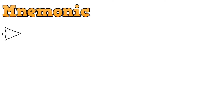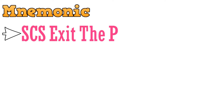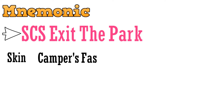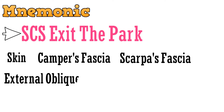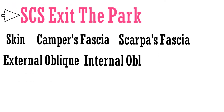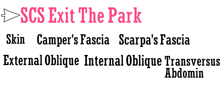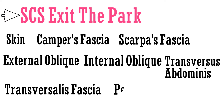The mnemonic to remember these layers is: SCS EXIT THE PARK. The first S denotes the skin, then Camper's fascia, and then Scarpa's fascia. The EX in EXIT is for external oblique, I for internal oblique, and T for transversus abdominis muscle. The next T denotes the transversalis fascia, and P in PARK denotes peritoneal fat.